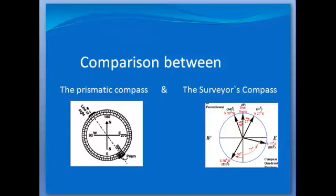Now comparing prismatic compass and surveyor's compass. In prismatic compass, the graduated ring being attached to the magnetic needle remains stationary when the compass box and the sight vane is rotated. While on the other hand, the graduated ring being attached to the compass box in surveyor's compass moves with the sights and needle remains stationary when the box is moved.